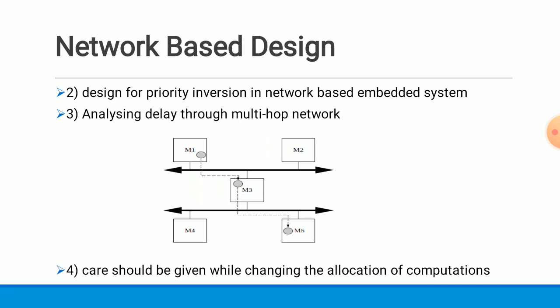The third consideration is that a network can be a single hop network or a multi-hop network. In a multi-hop network, for example, a message from node M1 to M5 may be routed through M3. Analyzing delay through a multi-hop network is also very difficult, and more difficult than analyzing a single hop network.